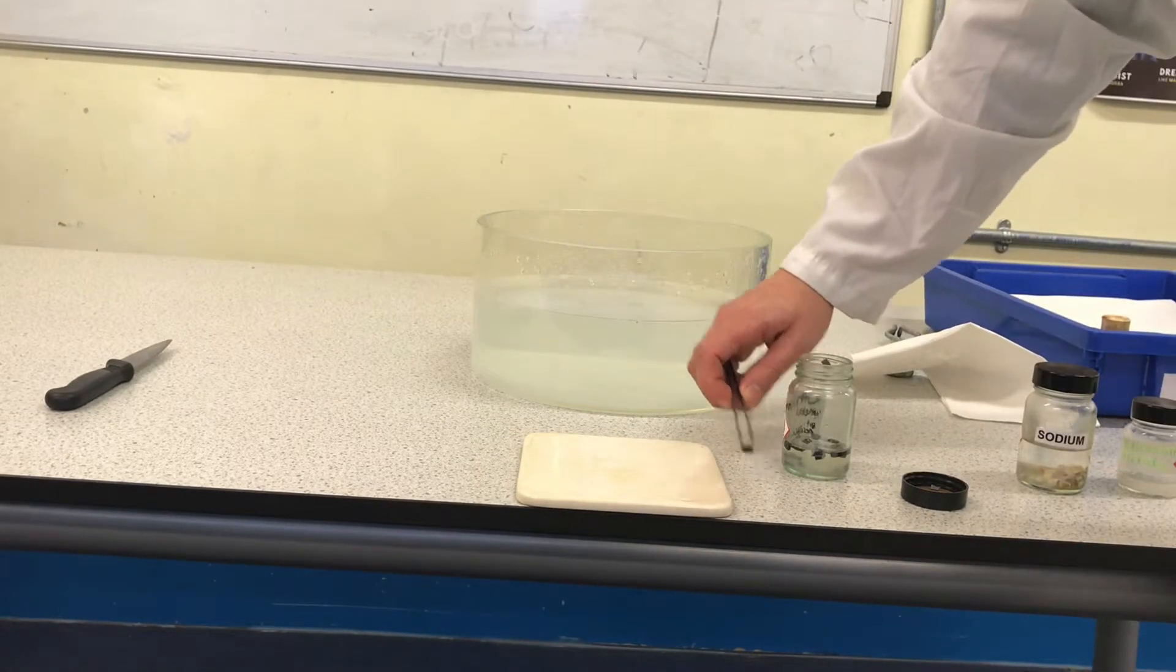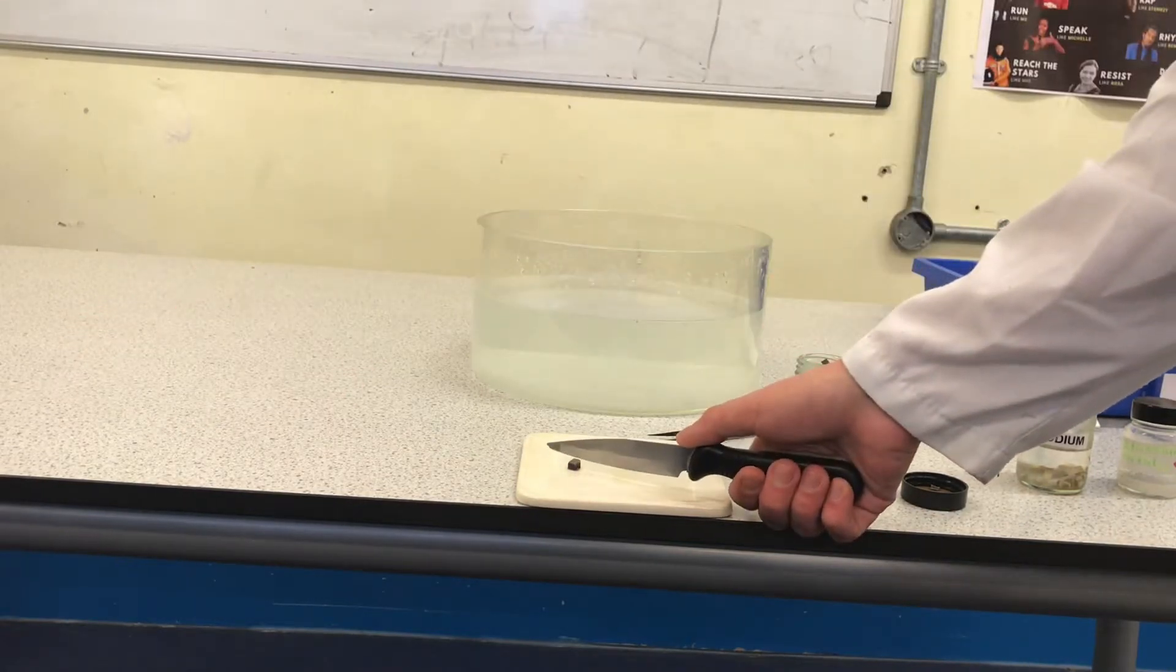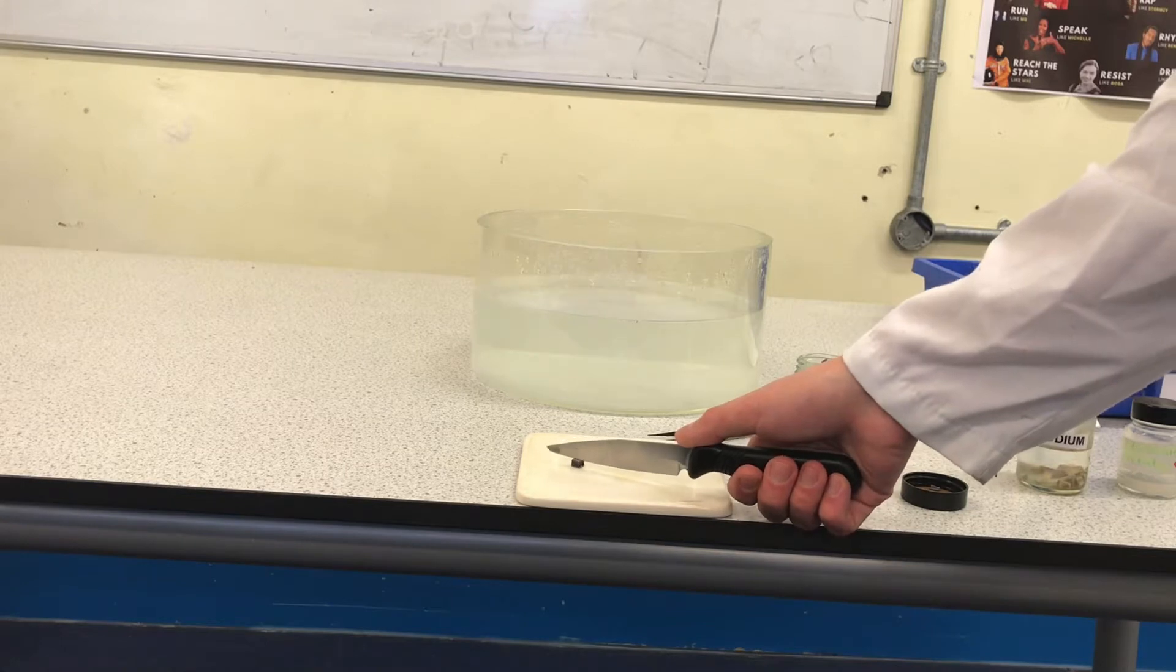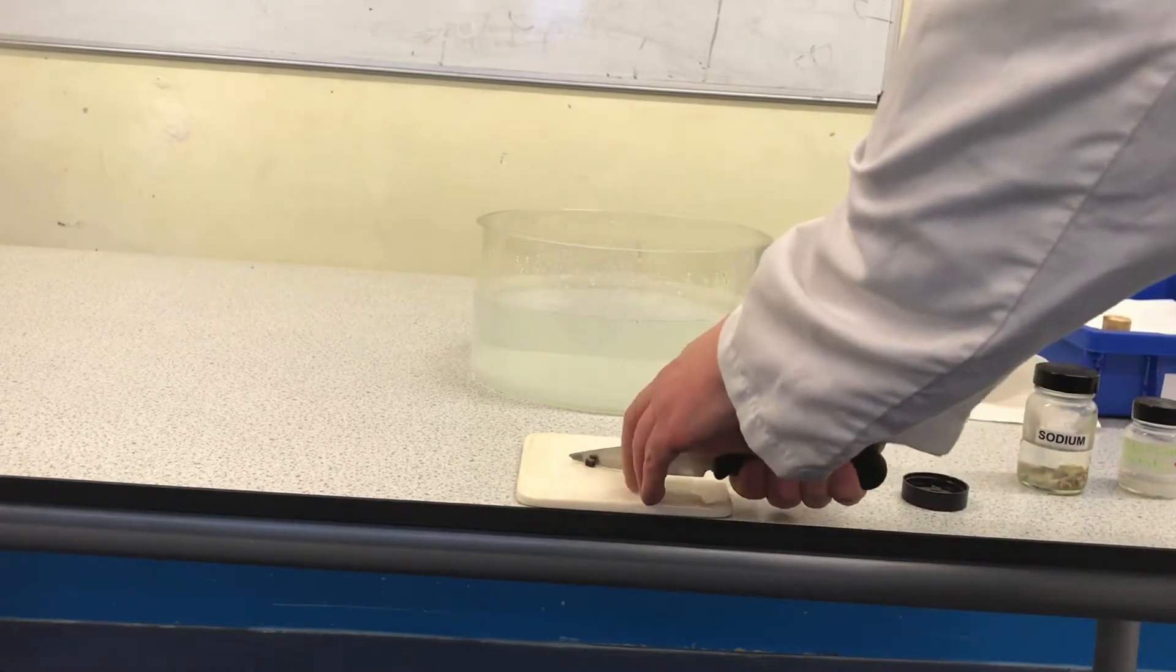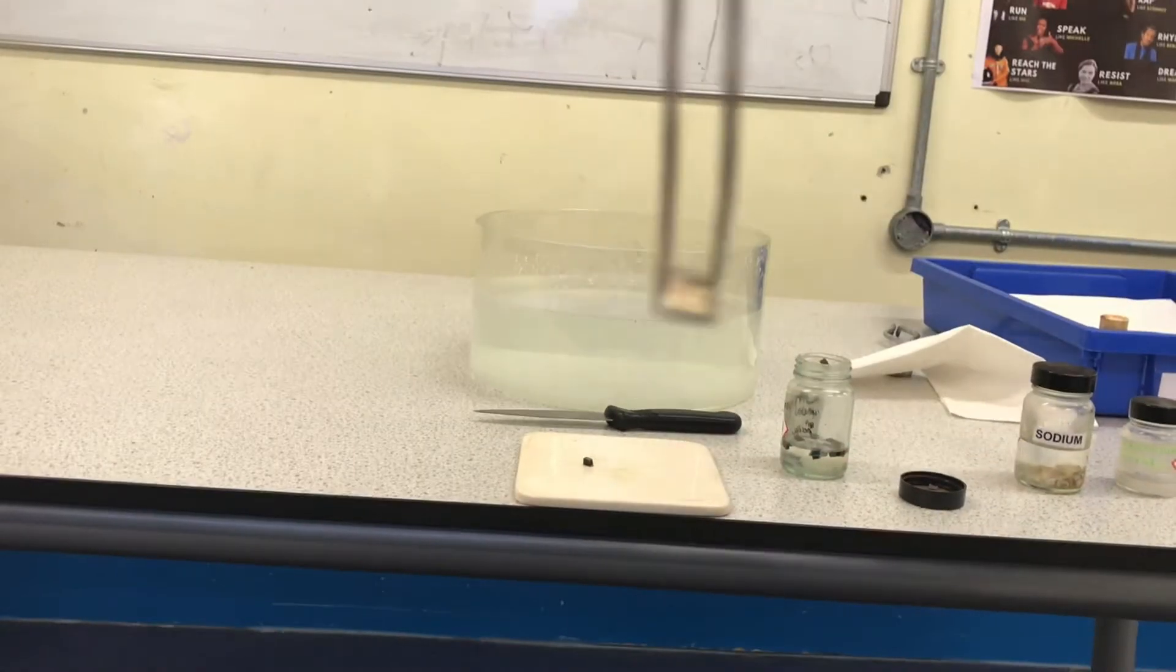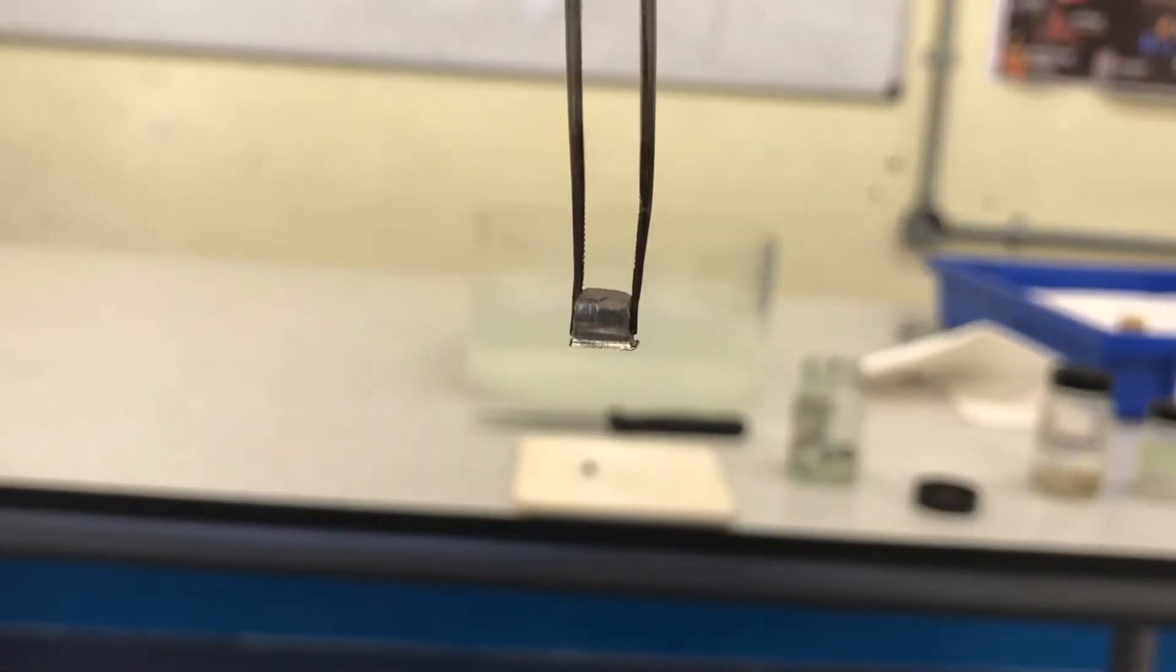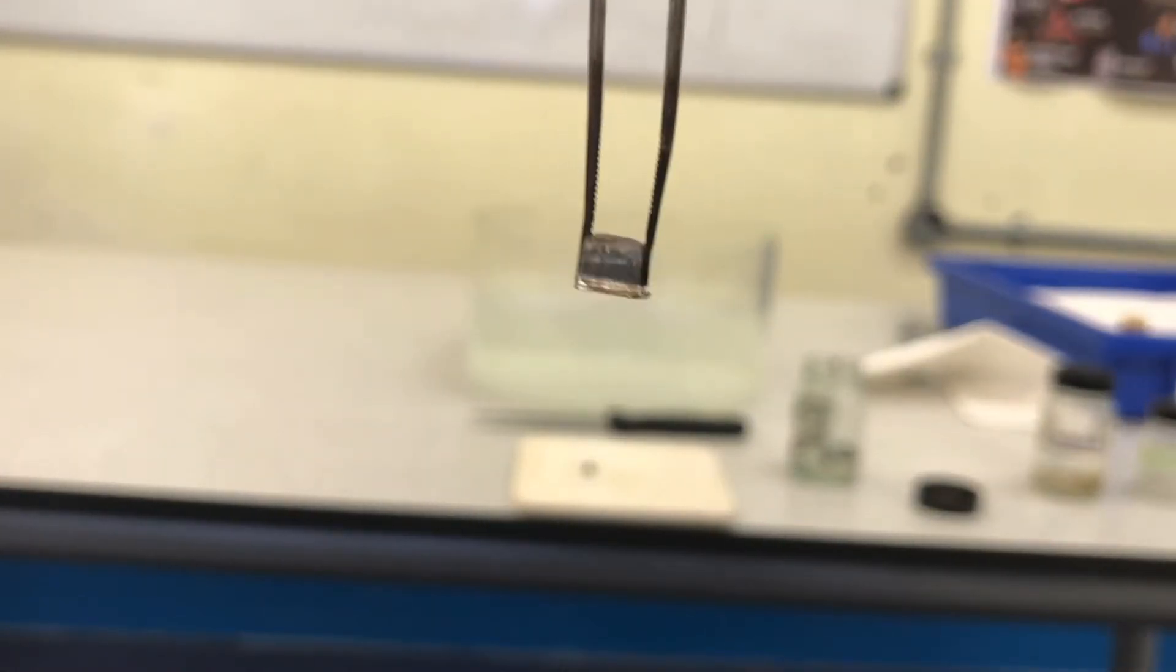You should not touch lithium with your hands as it will react with the water on your hands. You can see it's very soft as I'm cutting it with a knife. Now, after I cut the lithium, you can see this part has not yet reacted with the oxygen in the air, so it is very shiny. The scientific word being lustrous.